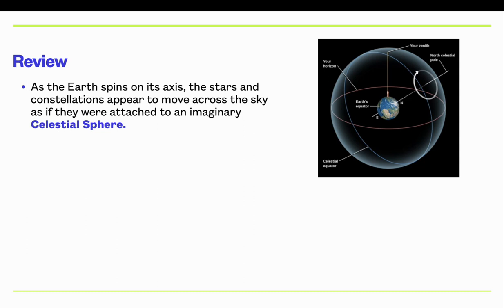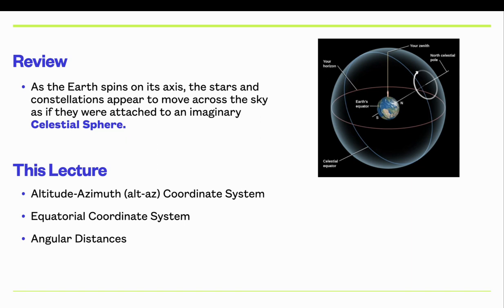Lecture 1.2: Coordinate Systems on the Sphere. In the last lecture, we discussed how, because the Earth spins on its axis, the stars and constellations appear to move across the night sky as if they were attached to an imaginary celestial sphere. In this lecture, we will look at coordinate systems on the sphere to describe the positions of the stars and planets in the sky.